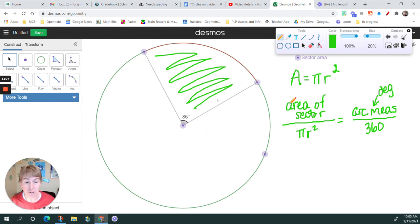So let me go ahead and use this and plug some stuff in. Let's suppose I'm looking for the area of the sector over pi r squared. So in this case, pi times my radius is 5 squared equals. On the other side, I've got my arc measure, my degrees, it's the same as the central angle. So it's 85 over my 360.